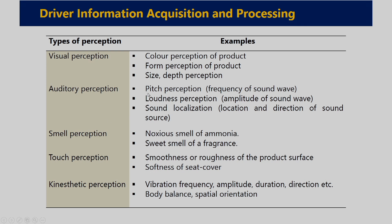Similarly, there is auditory perception — the electrical signals from the hair cells in the ear reach the brain, providing perception related to pitch, loudness, sound localization, and direction of the sound source. There is smell perception — noxious smells of ammonia or the sweet smell of fragrance. Touch perception: cutaneous receptors in the skin convert stimuli into electrical signals that reach the brain, providing perception about the softness of seat covers or the smoothness or roughness of a product surface.